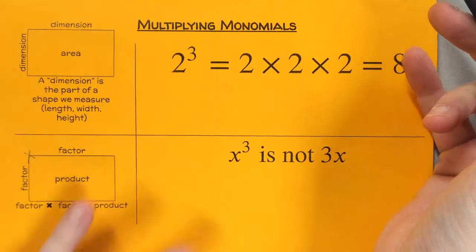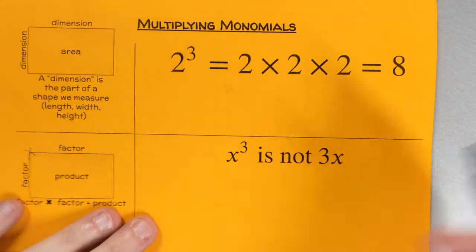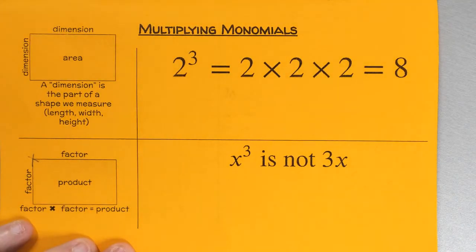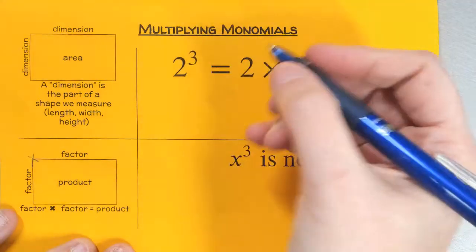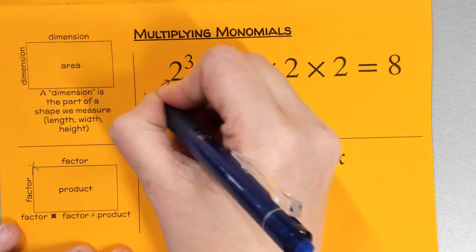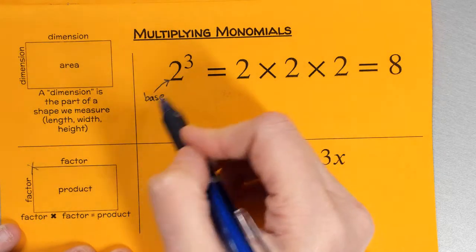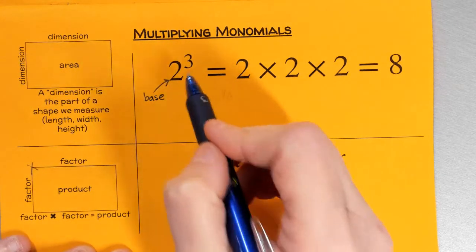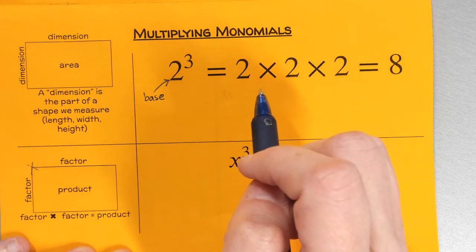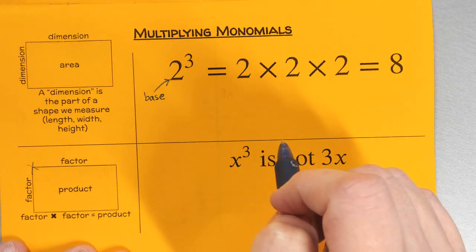Next we need to talk about exponent vocabulary, because we're really going to start moving into exponents. We're going to be manipulating exponents of variables, so we need to make sure we understand them. The part on the bottom is called the base — that's the number I'm multiplying. Exponents are repeated multiplication; multiplying is repeated addition.